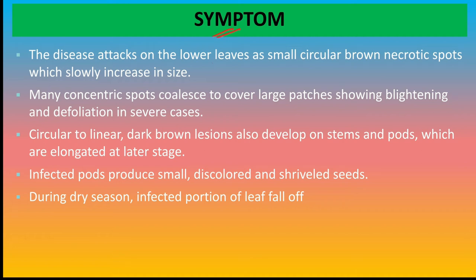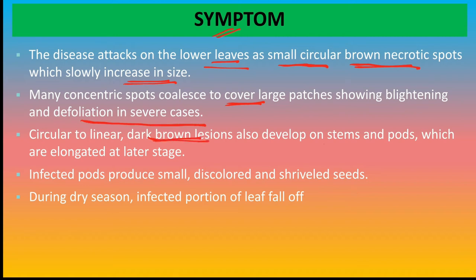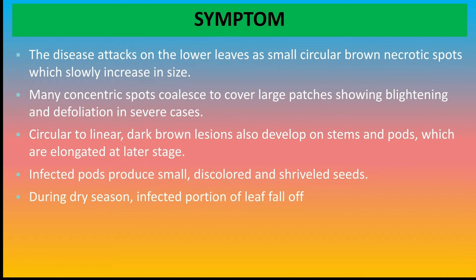Symptom: The disease attacks on the lower leaves as small circular brown necrotic spots which slowly increase in size. Many concentric spots coalesce to cover large patches showing blightening and defoliation in severe cases. Circular to linear dark brown lesions also develop on stems and pods which are elongated at a later stage. Infected pods produce small discolored and shriveled seeds; during dry season, infected portions of the leaves fall off.